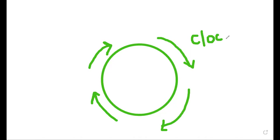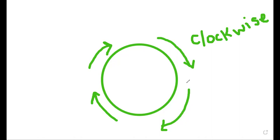Clockwise is like a clock. When you see the time on a clock, you will see the hands move clockwise — like 1, 2, 3, 4, 5. You will not see the opposite side. So this is what we call clockwise.